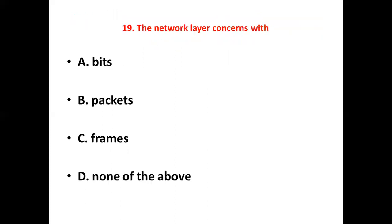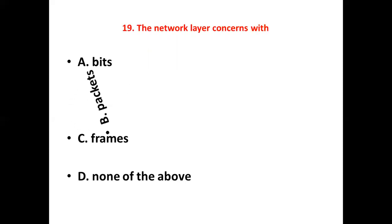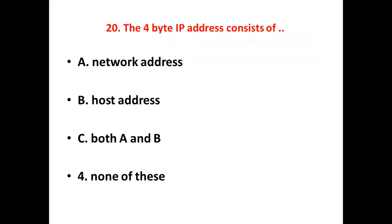Seventeenth bit: A computer which is powerful with faster processor, more memory and disk space in a computer network is called — Option A: client. Option B: server. Option C: sender. Option D: receiver. Answer: Option B, server.